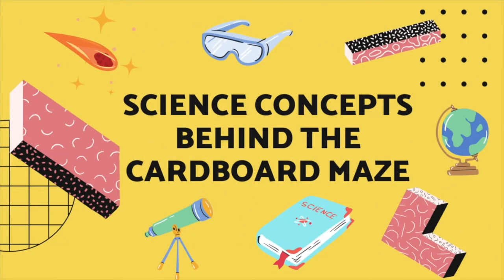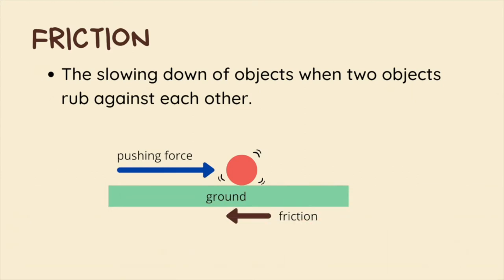Now let's talk about some science concepts behind the maze. Friction is the force that slows objects down when they are rubbing against each other. In the image, there is friction when the ball is rolling because it is rubbing against the ground. When you are building your maze, you want the ball to have a little friction so that it rolls longer.